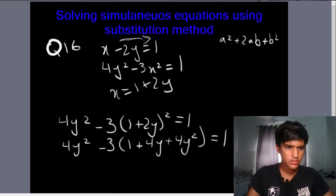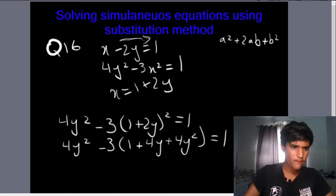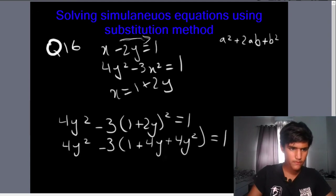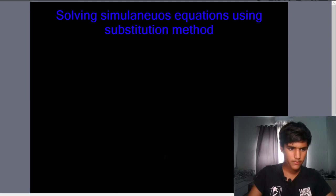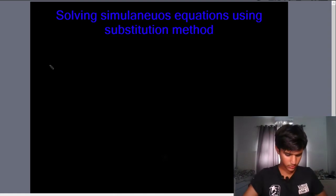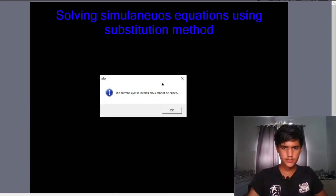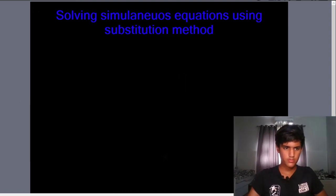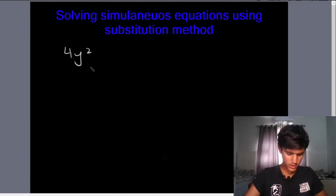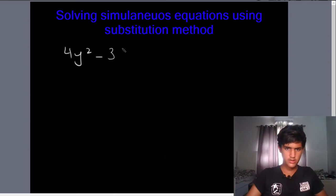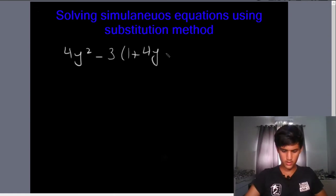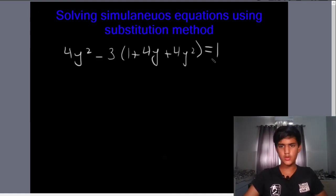Moving to a new page, we distribute the minus 3: 4y squared minus 3 minus 12y minus 12y squared is equal to 1. We then multiply 3 into 4y squared to get the expanded form.